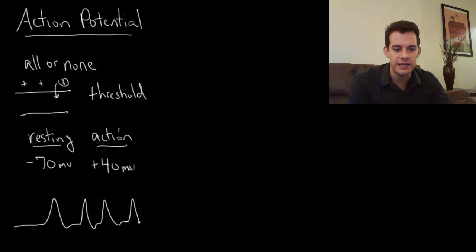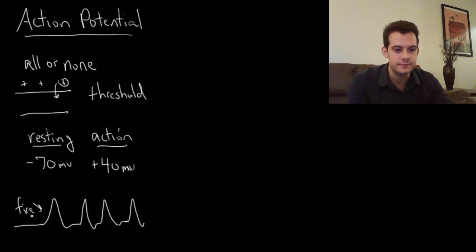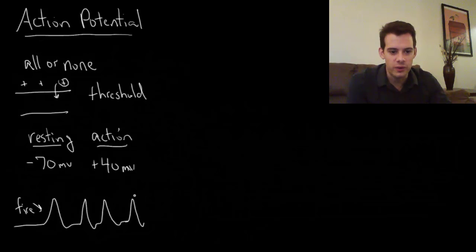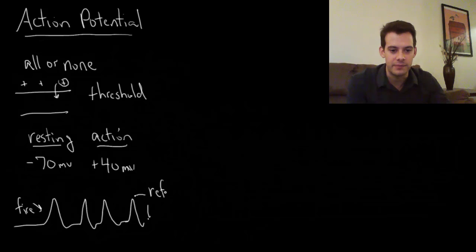Each of these jumps represents the neuron firing. There's a period of time between when it has fired and before it's ready to fire again — when it's back at resting potential — and this is called the refractory period.